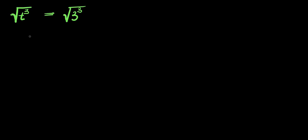Hello. How to solve this radical problem: we have the square root of t to the power of three, and this equals the square root of three to the power of three. We are solving for all values of t that satisfy this equation.